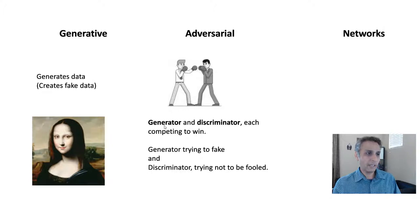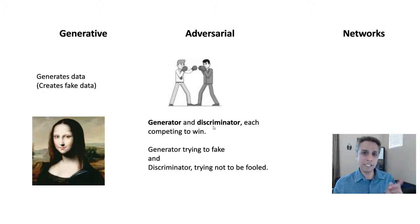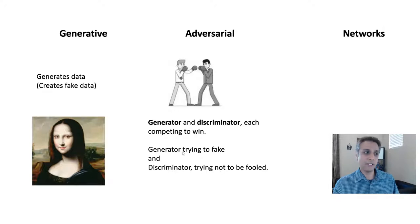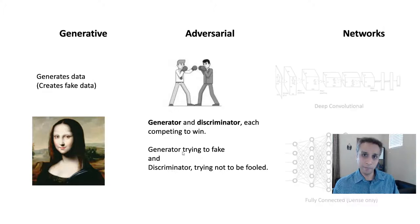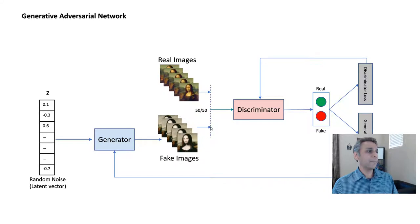One component is the generator and the other is the discriminator. The generator tries to generate fake images, and the discriminator tries to catch it and say whether an image is fake or real. The discriminator doesn't want to be fooled, and the generator is trying to fool it. Network just refers to a neural network.